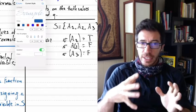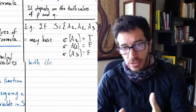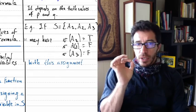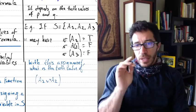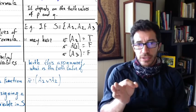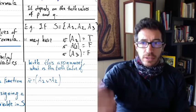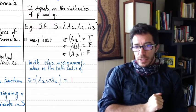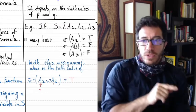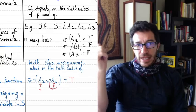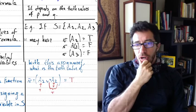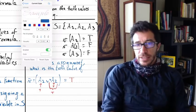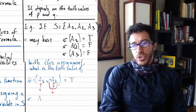Now the next step is to assign truth values to formulas in general, not just the variables. With this assignment, suppose we want to assign a truth value to the formula a1 OR NOT a2. Well, it has to be true, because a1 was assigned true, and a2 was assigned false so the negation of a2 is true. If you have an OR of two things that are both true, you get a true answer.